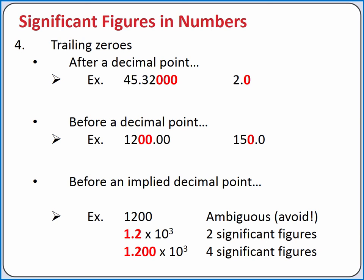For example, if we have the number 1,200 without an explicit decimal point, we don't know how many significant figures are in the measurement.